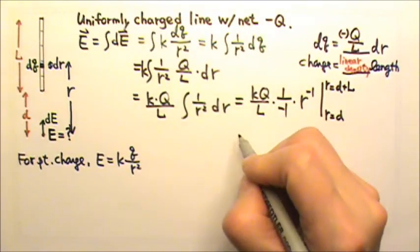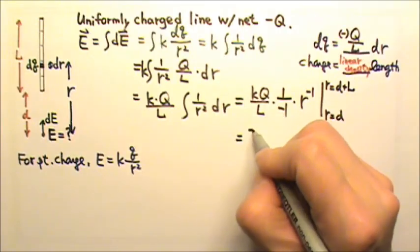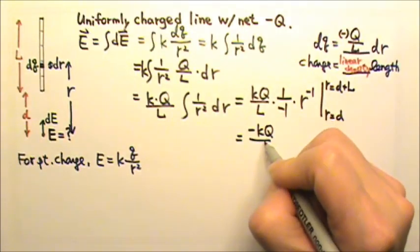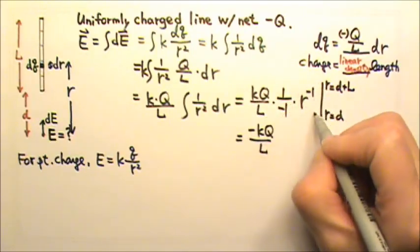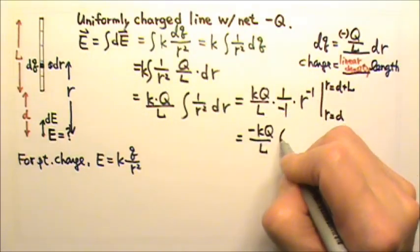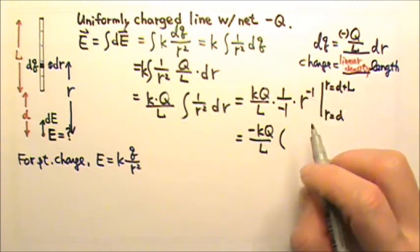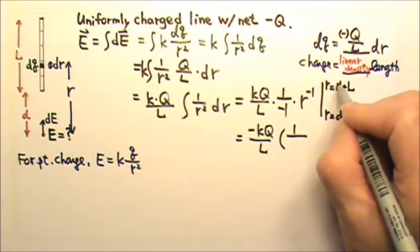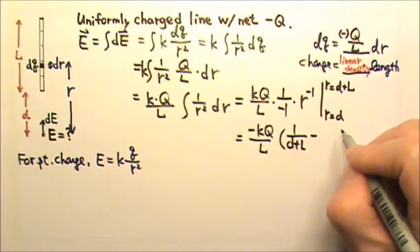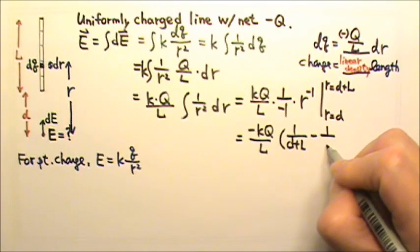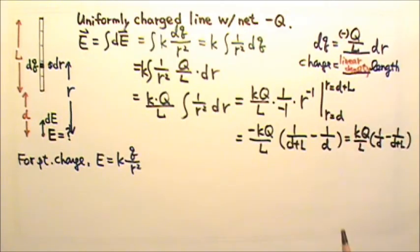So let's see. What we have is negative kq over L. And then we have the 1 over r. And we have to first plug in the upper bound. So it's 1 over d plus L minus what we get when we plug in the lower bound, which is the same as this. If I take out the negative and switch those two.